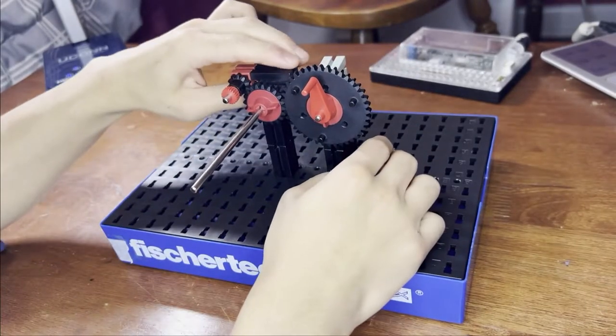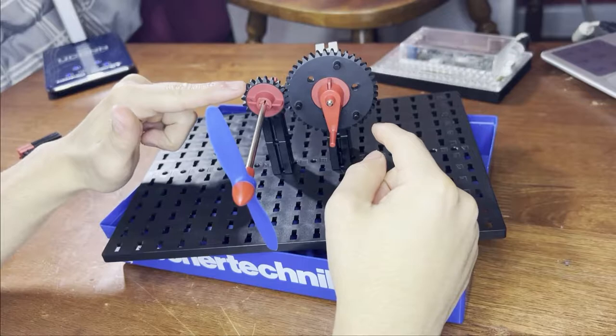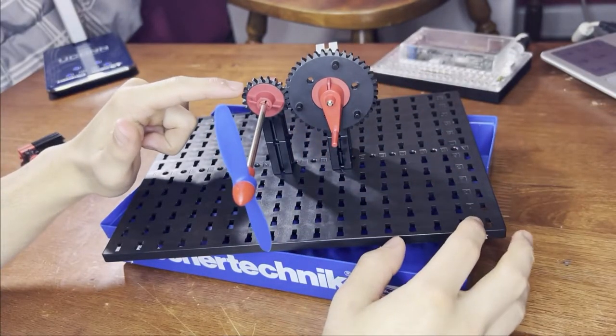So let's demonstrate. Alright, so right now you can see that the driver gear is much larger than the driven wheel. This is 40 teeth and this is 20 teeth.